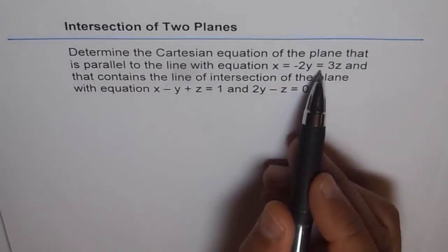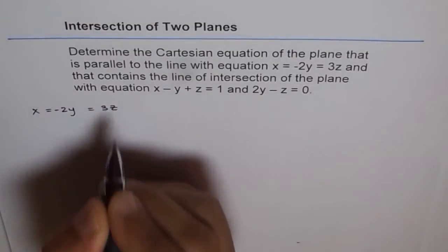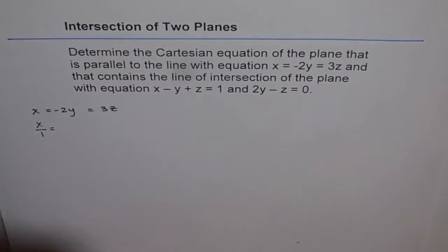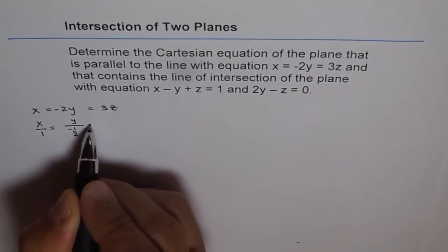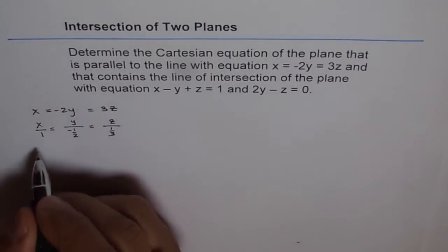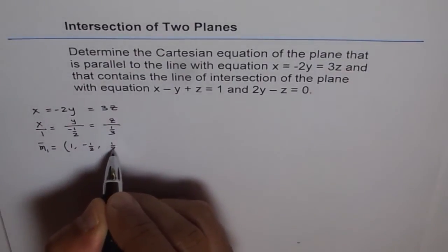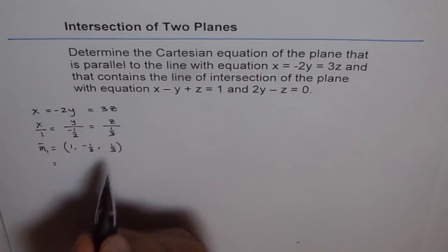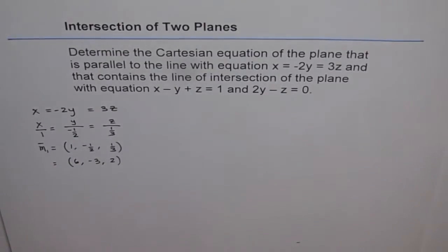Let's find the direction vector of the line x equals minus 2y equals 3z. We can write this as x over 1 equals y over minus one-half equals z over one-third. This gives us the direction vector (1, -1/2, 1/3). It is always good practice to write the direction vector as integers, so we multiply by 6 to get (6, -3, 2). That's our first direction vector.